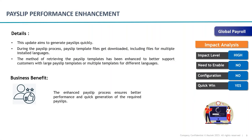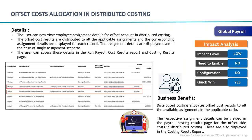The first update is the Payslip Performance Announcement. Oracle has done an internal update to improve performance for generating payslips — payslips will now be generated more quickly, giving more time for payroll admins and managers to do their tasks. We've highlighted this as high impact because it will affect almost everyone in the organization. There is no configuration required and we've classified it as a quick win.